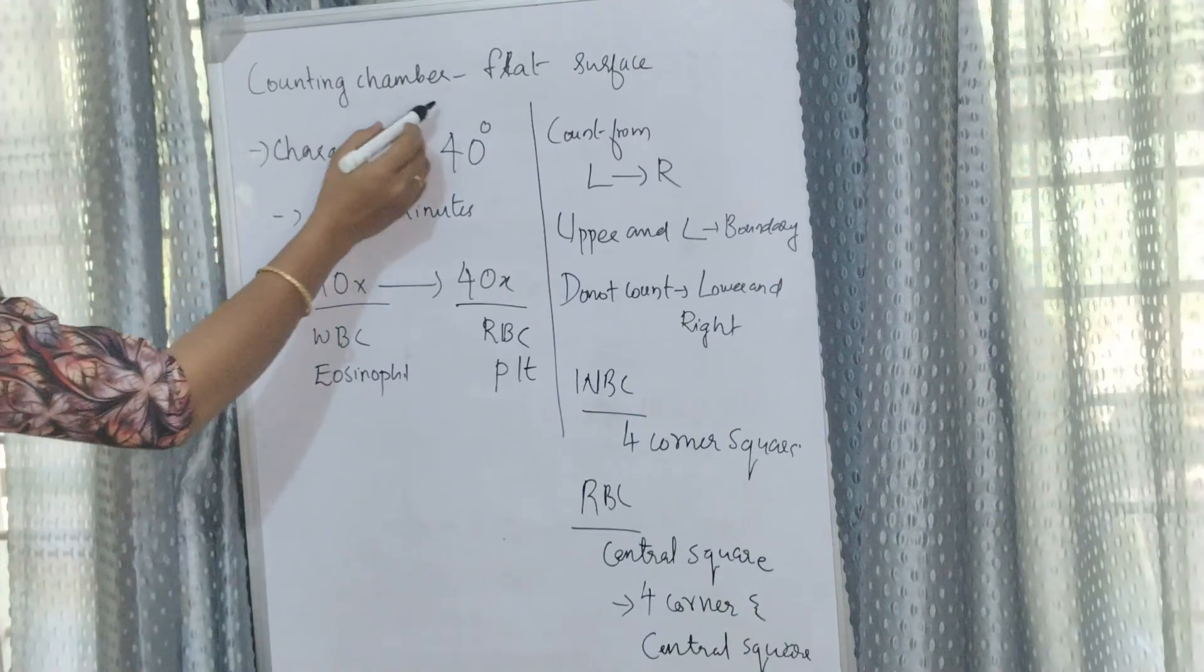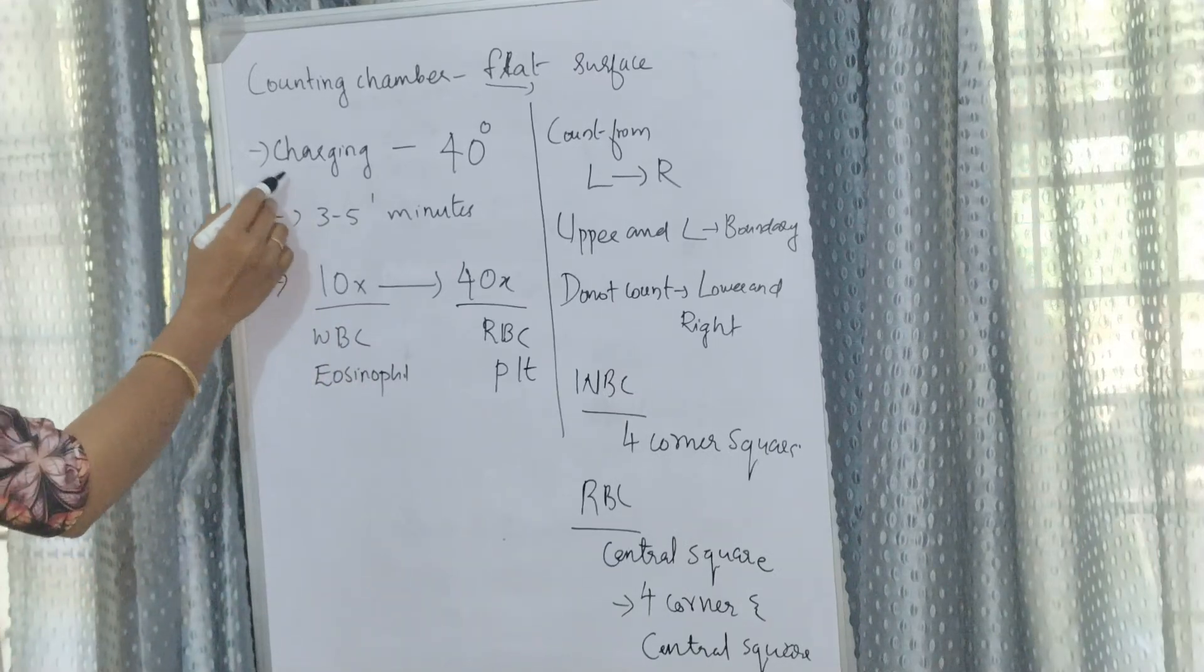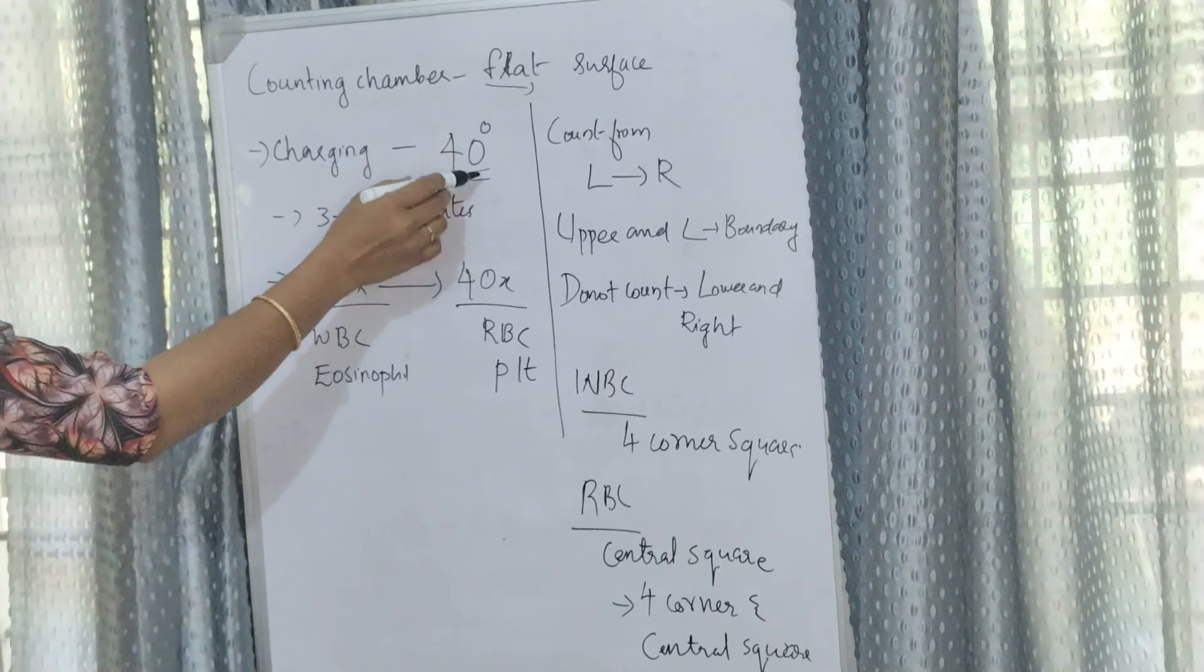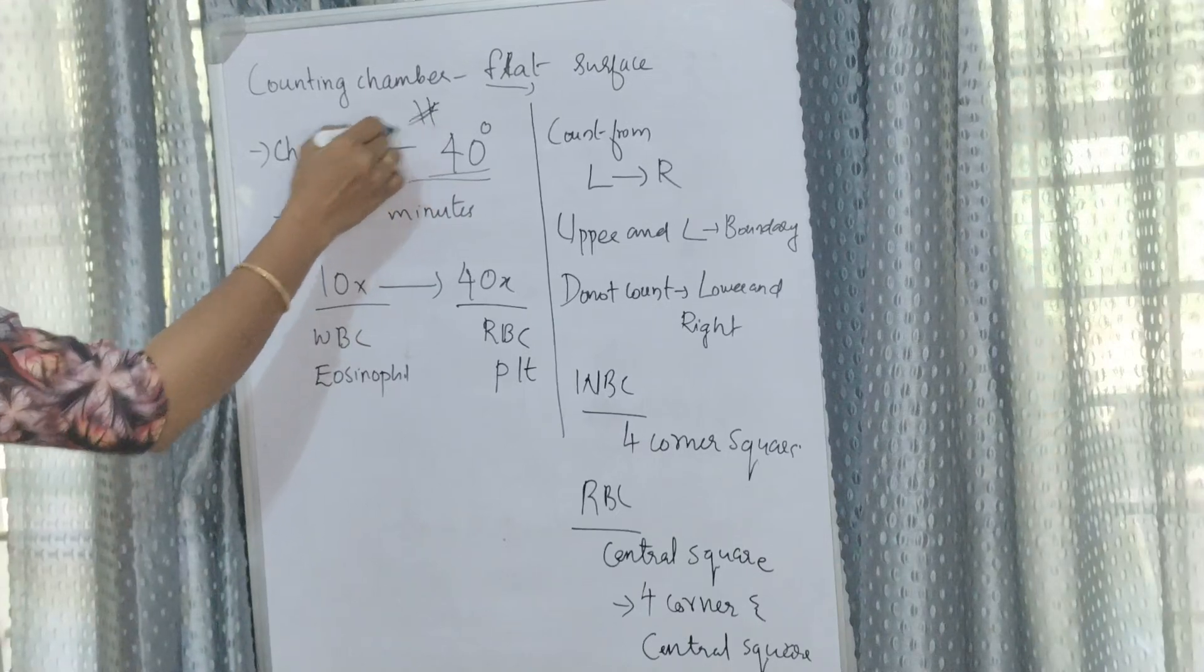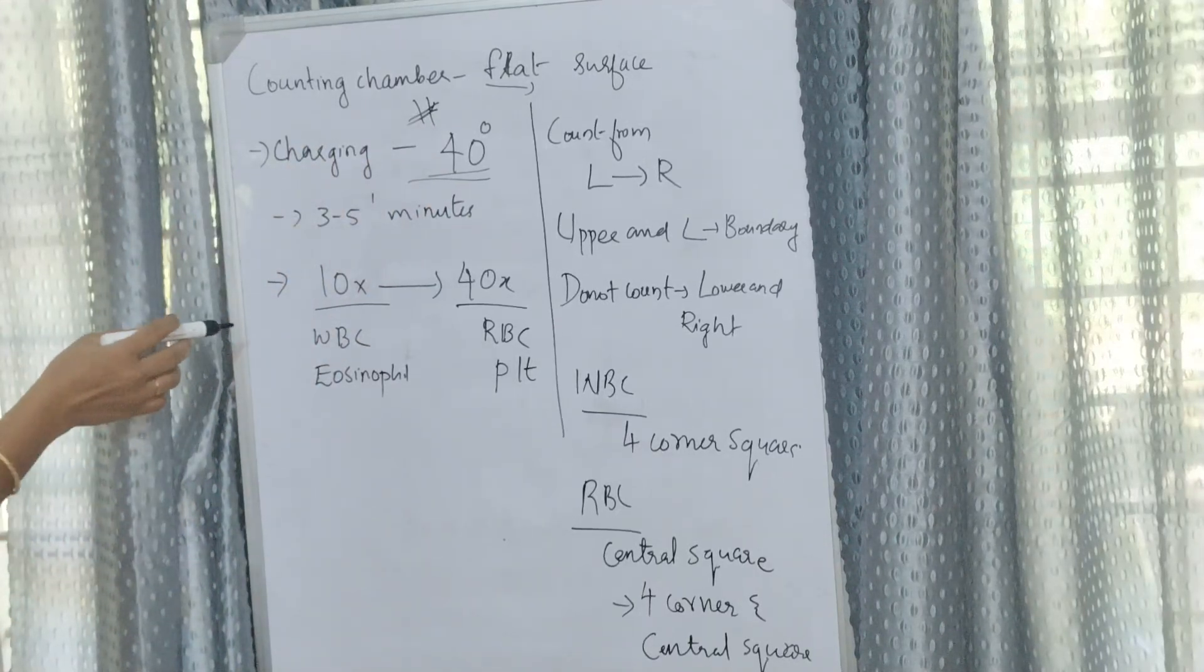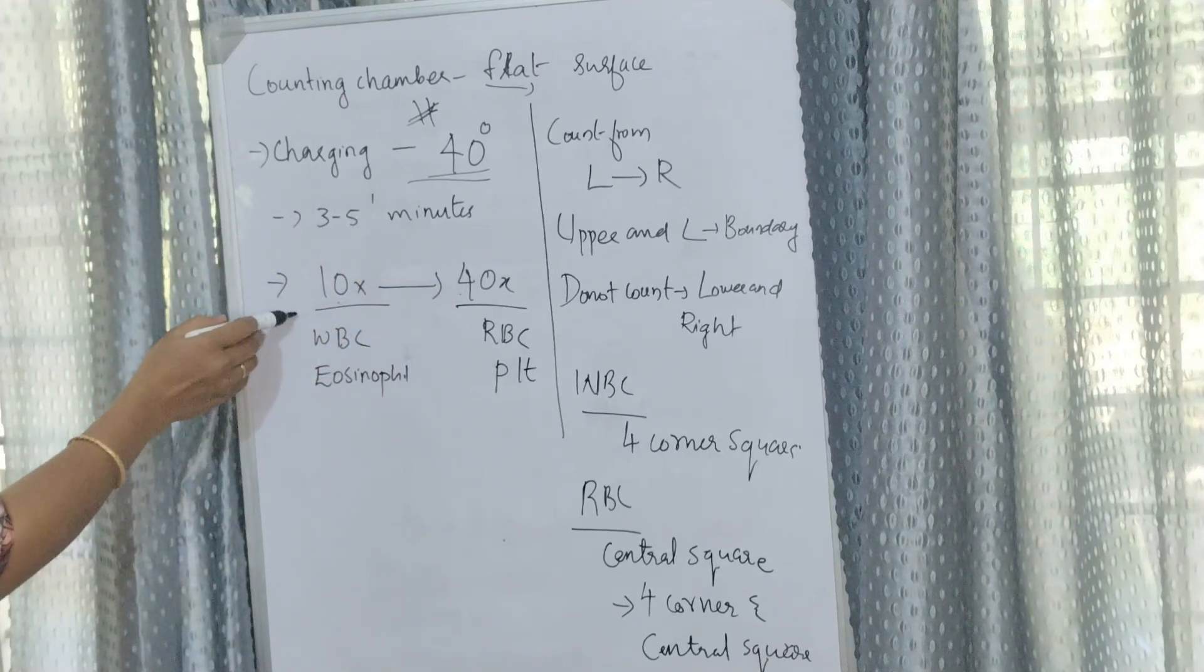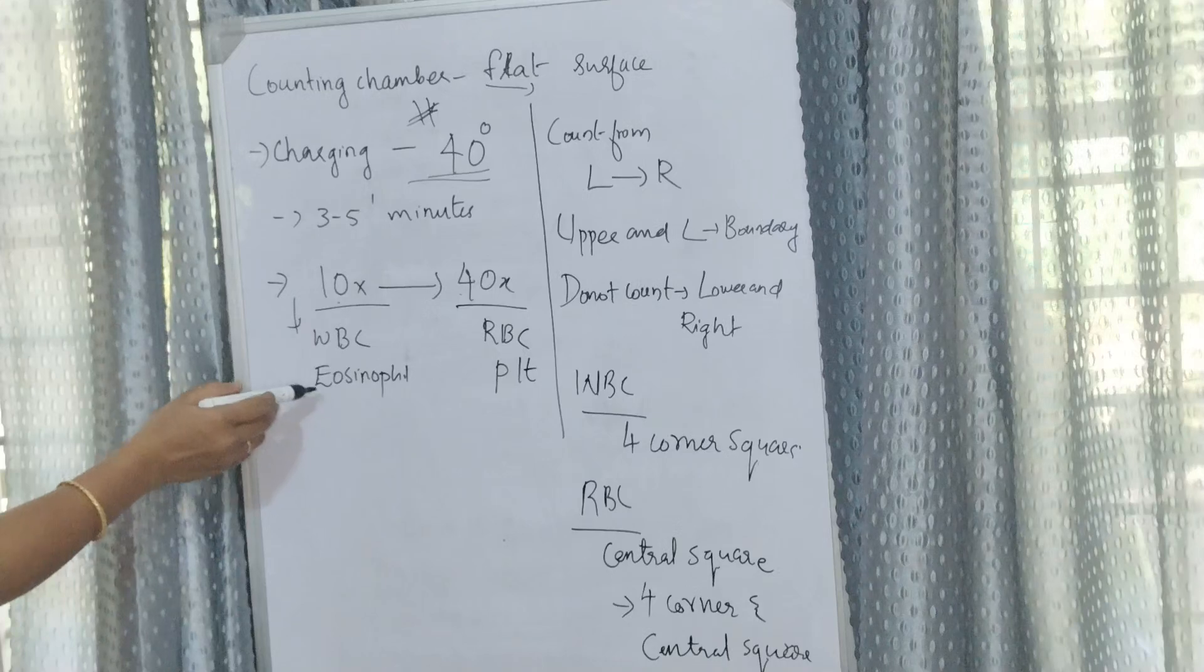The counting chamber is placed on a flat surface and charging is done at an angle of 40 degrees. The charging angle is important, so note it down and allow three to five minutes to settle.